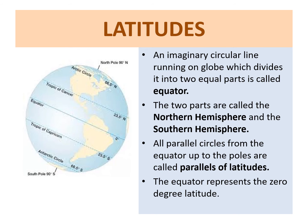As the equator divides the globe into two equal parts, all parallel circles from the equator up to the poles are called parallels of latitudes. Latitudes are measured in degrees. The equator represents zero degree latitude. All parallels north of the equator are called north latitudes, and all parallels south of the equator are called south latitudes. The value of each latitude is therefore followed by either the word north or south.